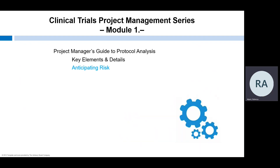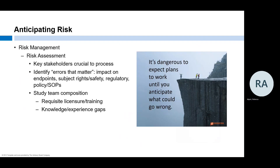Now that we have a solid understanding of the protocol, let's talk about anticipating risk. Risk management is a key element of the project management life cycle planning phase. Assessing the project for risks is the first step to a successful risk management plan, and including key stakeholders in the assessment is crucial. As the project manager, you have the thousand-foot view of the project, but it's the details on the ground that are most likely to trip us up.